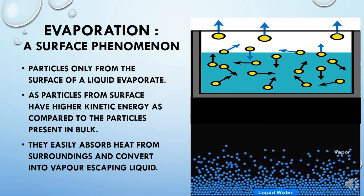How does evaporation take place? Evaporation is a surface phenomenon. As you can see in this video, particles only from the surface of the liquid escape its boundaries, because particles present at the surface have higher kinetic energy compared to particles in the bulk. Surface particles have no other particles above them to bind through intermolecular force. That is why surface particles have higher kinetic energy and easily absorb a small amount of heat from the surroundings and convert into vapor, escaping the surface of the liquid.